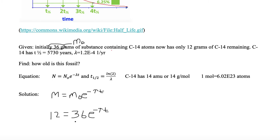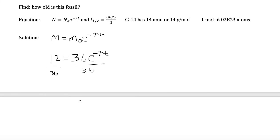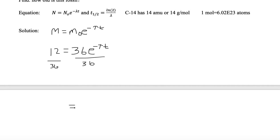So now we need to divide both sides of the equation by 36, and we can see 12 divided by 36 is just one-third. On the right-hand side of the equation, we can eliminate the 36. So we have one-third on the left-hand side, and we have e to the minus lambda t on the right-hand side.